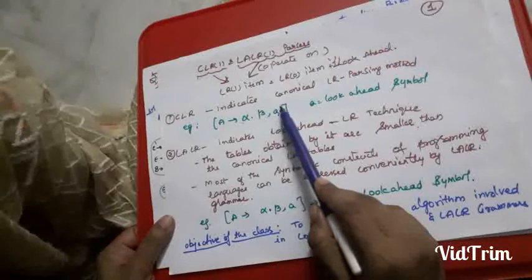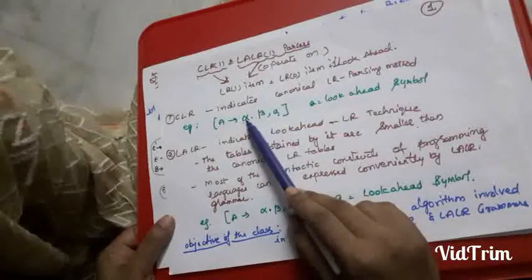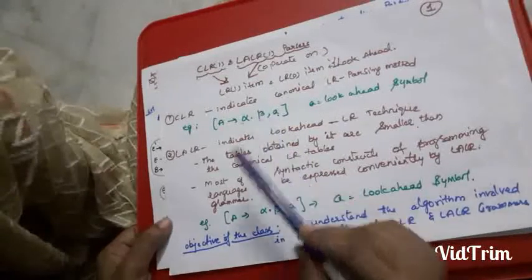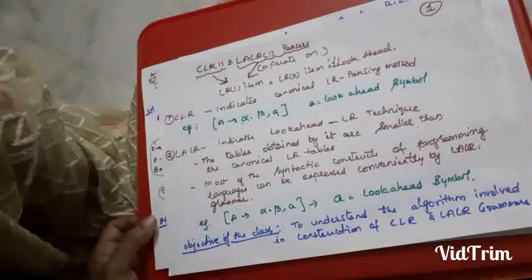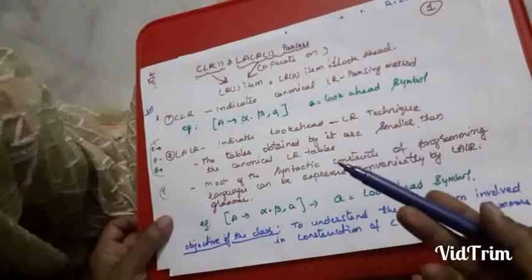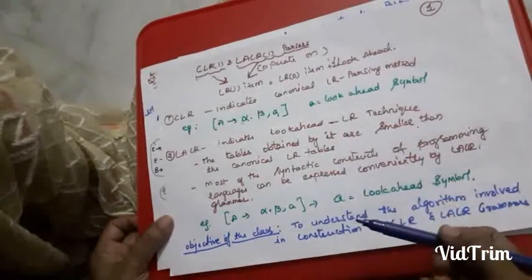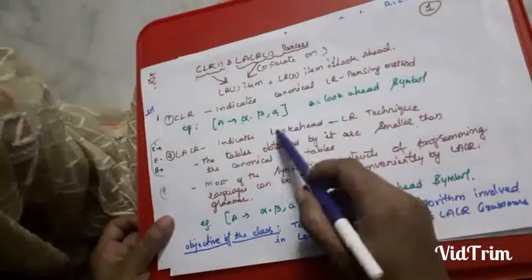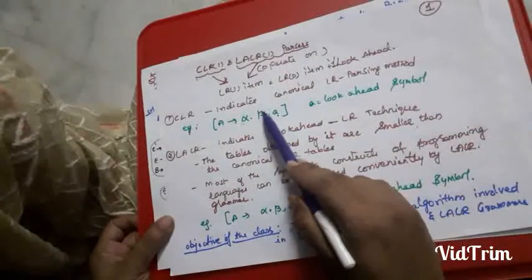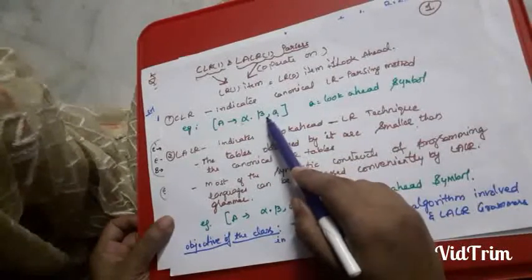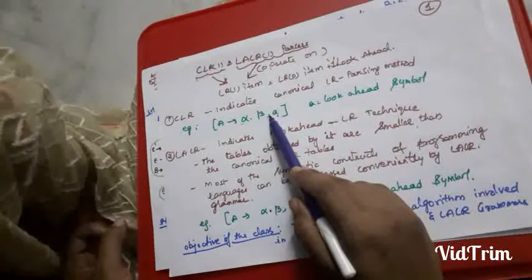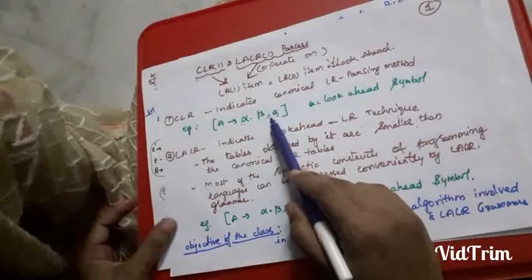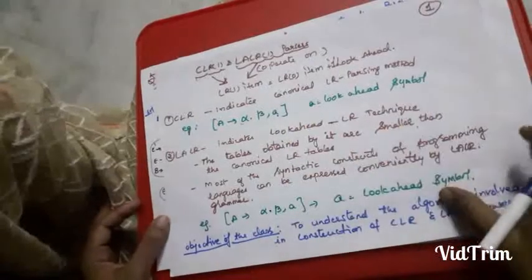After the dot and a comma, we have terminal values called the look-ahead symbol. The look-ahead symbol is determined by computing the FIRST of the non-terminals we are going to consider. We get the look-ahead symbol this way, which we will see when we do the problem.